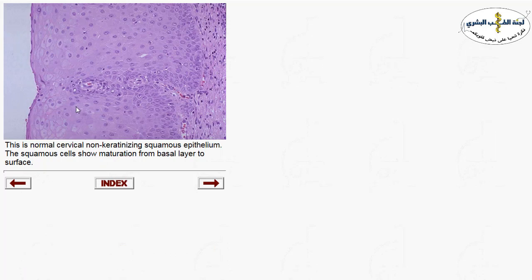The uterine cervix is composed of ecto- and endocervix. The ectocervix is lined by squamous epithelium and the endocervical portion is lined by columnar epithelium. You can appreciate the maturation from the bottom of the epithelium up to the surface of the squamous epithelium. This maturation is important because dysplasia disrupts the normal squamous epithelium.